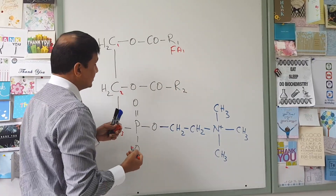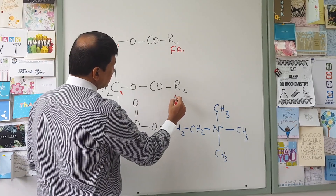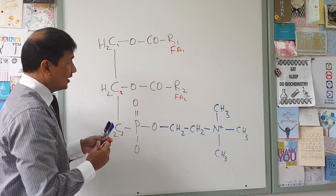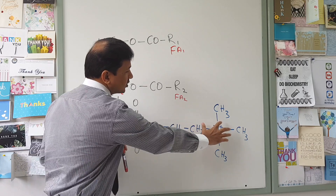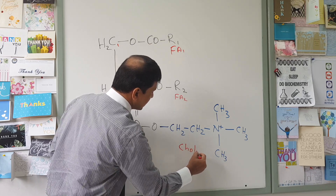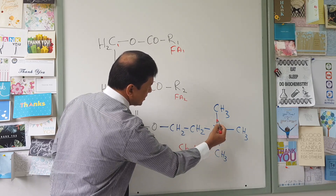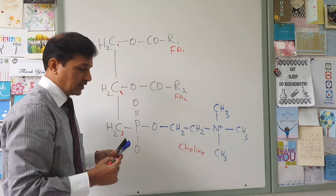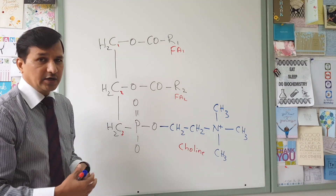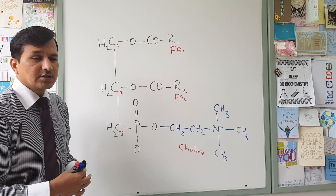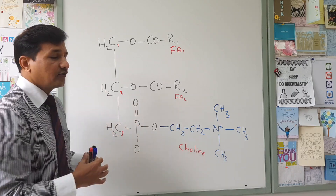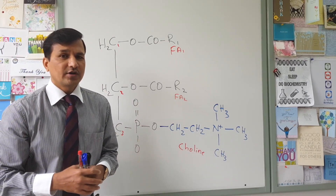It can be a different type of fatty acid, and then fatty acid 2 is attached to the second carbon. The third carbon is attached with a phosphate, and to this phosphate a functional group will be attached. The functional group attached here is choline. Choline is CH2-CH2-N+ with 3 methyl groups attached. So this entire structure we call phosphatidylcholine, and this phosphatidylcholine is also called lecithin. This is the predominant type of glycerophospholipid found in membranes.